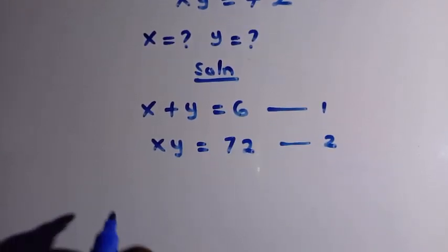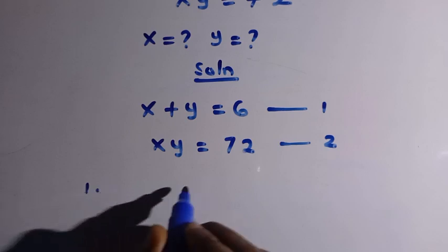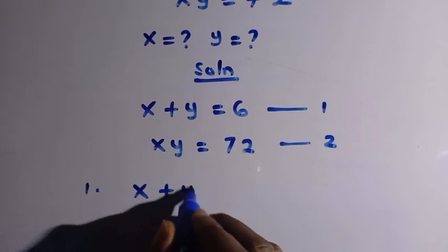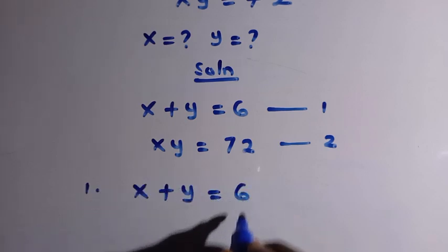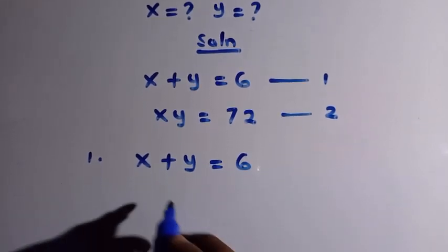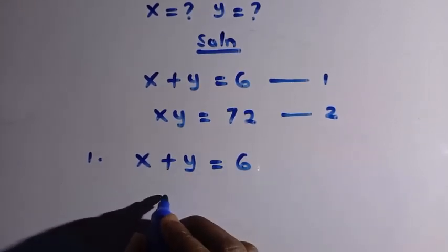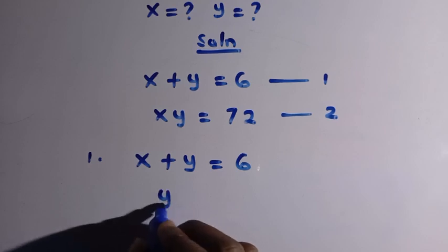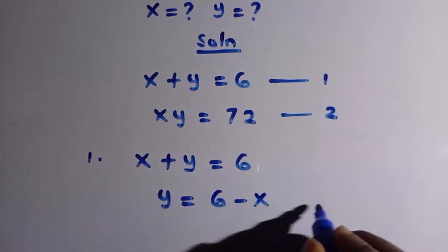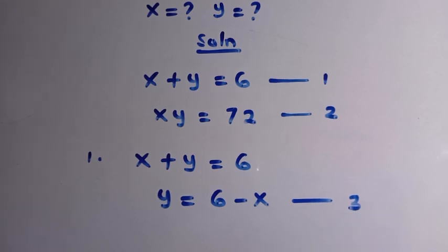From equation 1, we have x plus y equals 6. Let's make y the subject of the relation here. We have y equals 6 minus x — we consider this as equation 3.